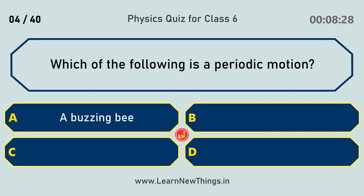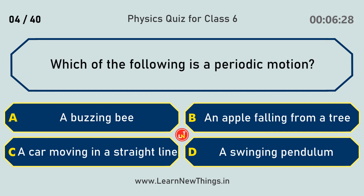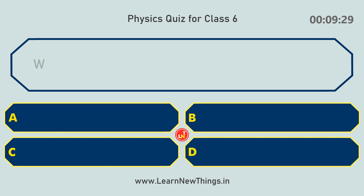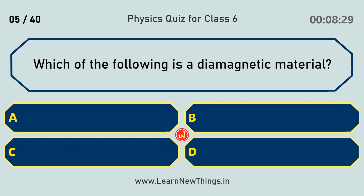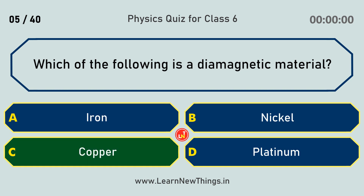Which of the following is a periodic motion? A swinging pendulum. Which of the following is a diamagnetic material? Copper.